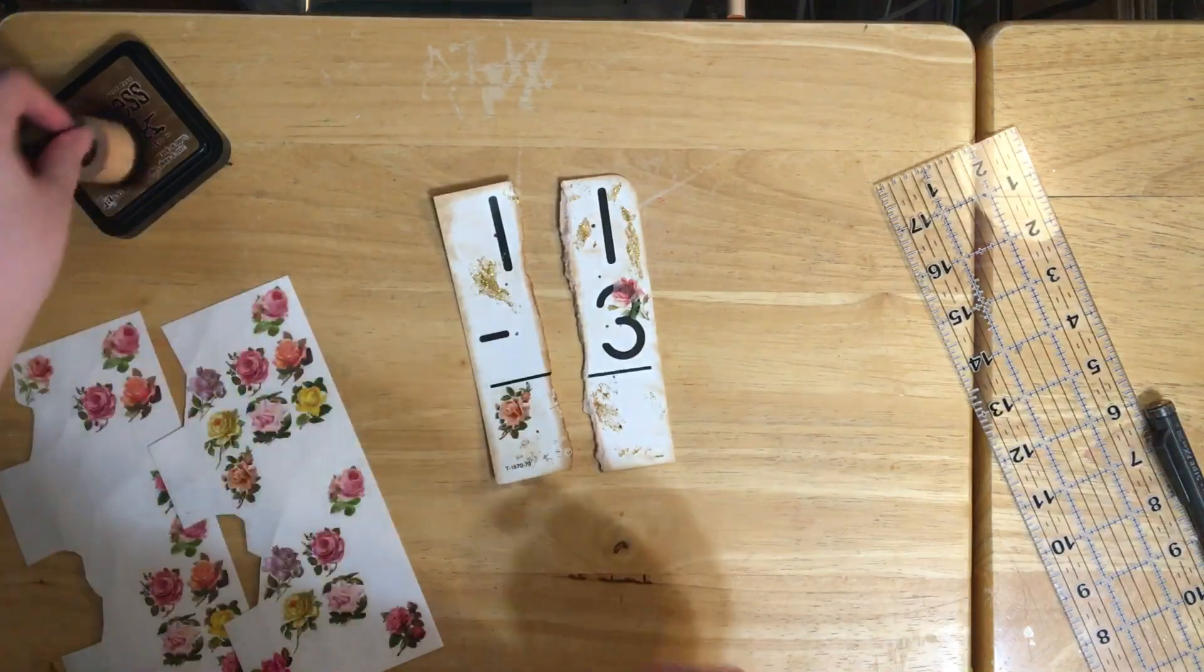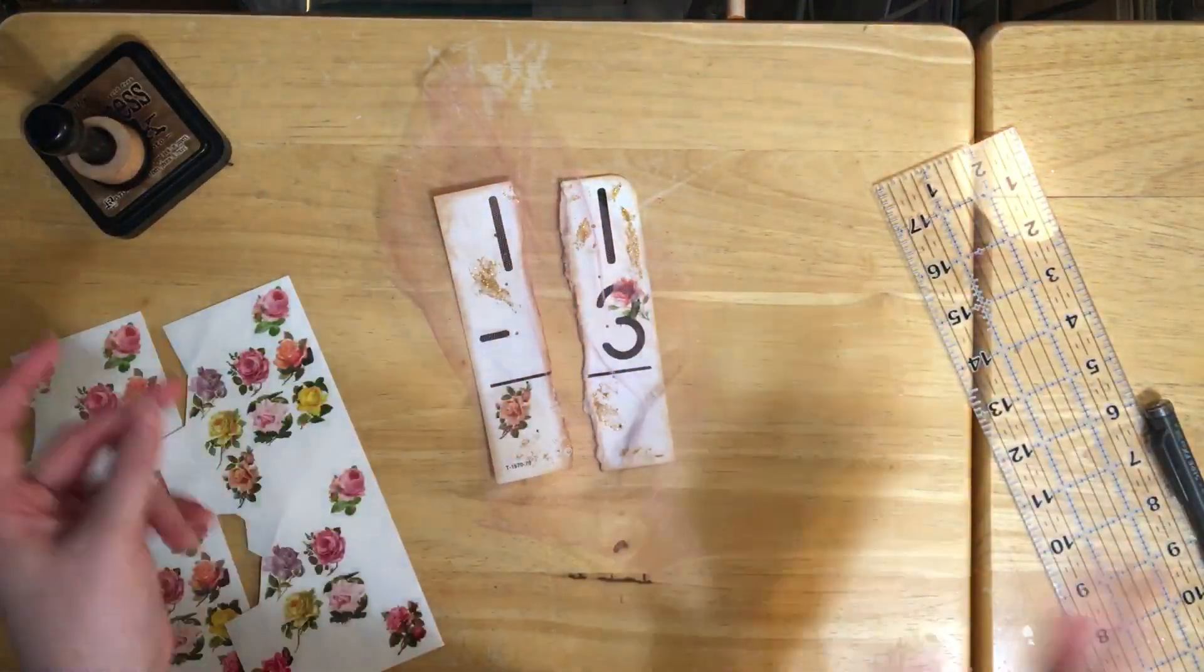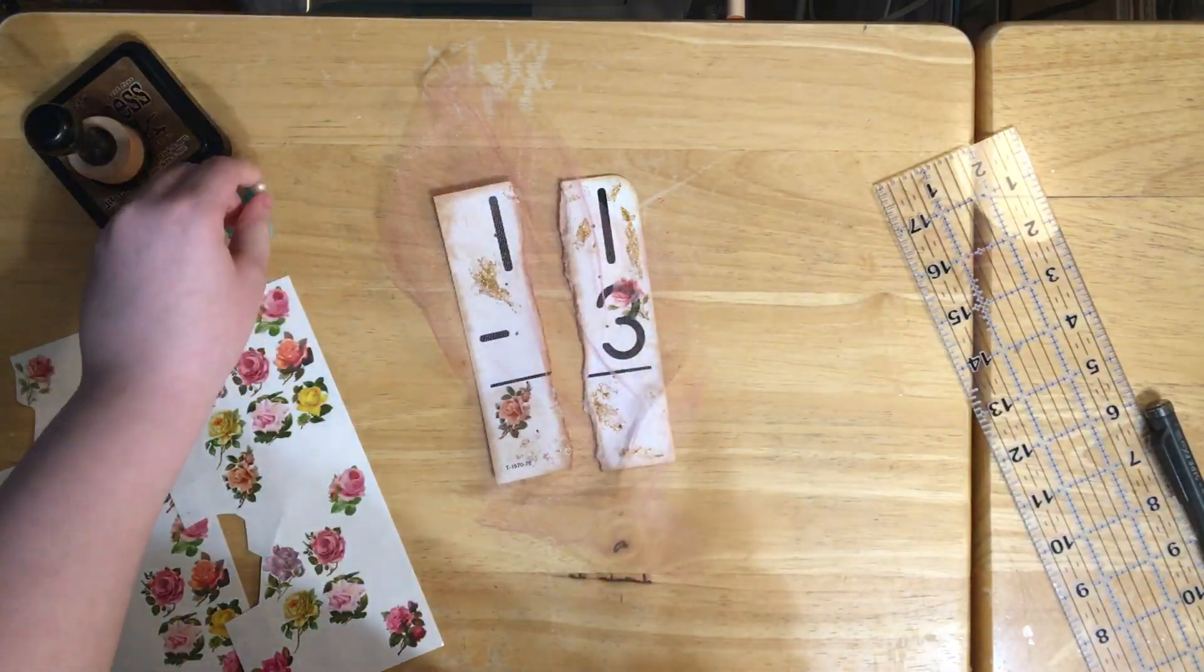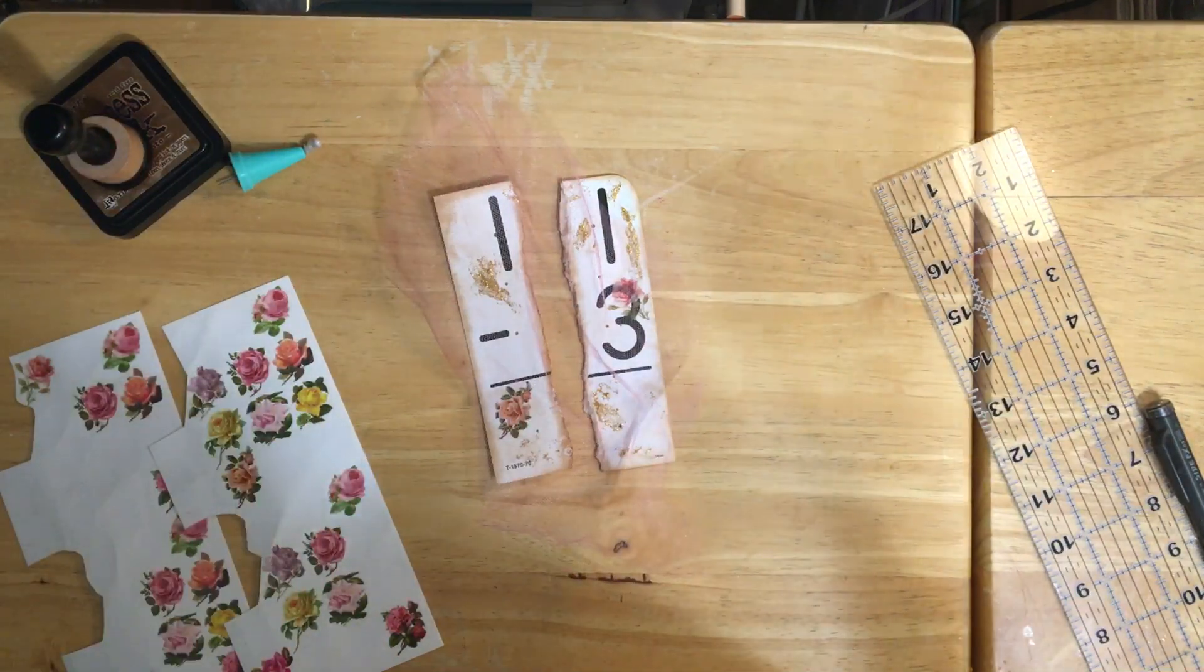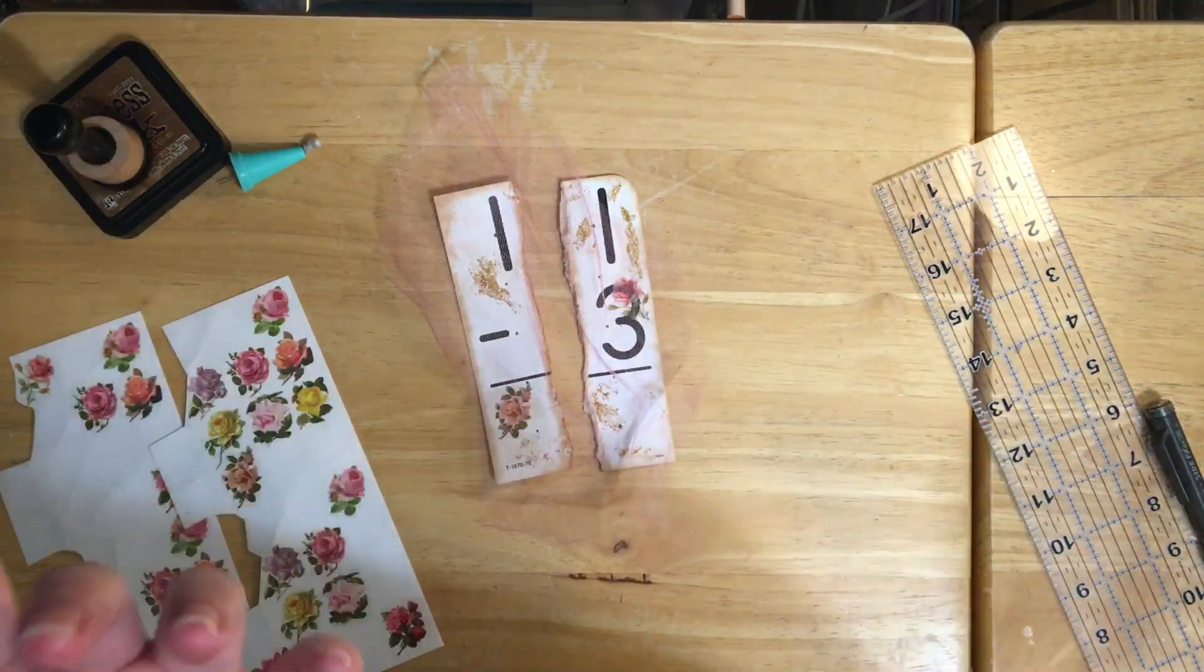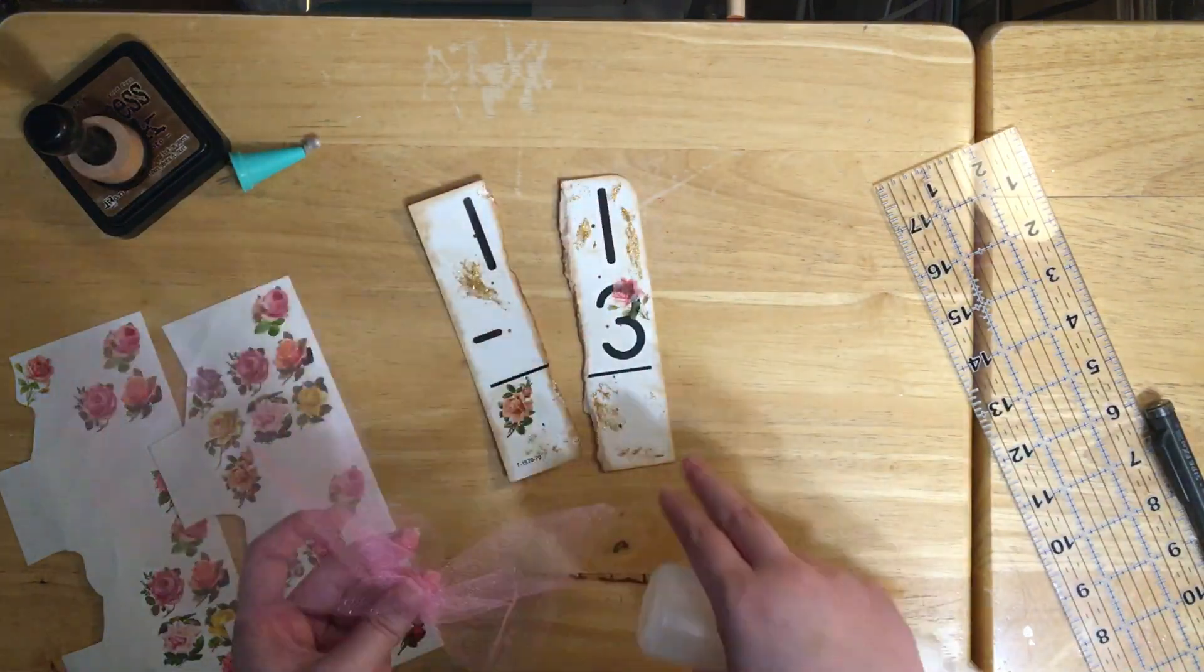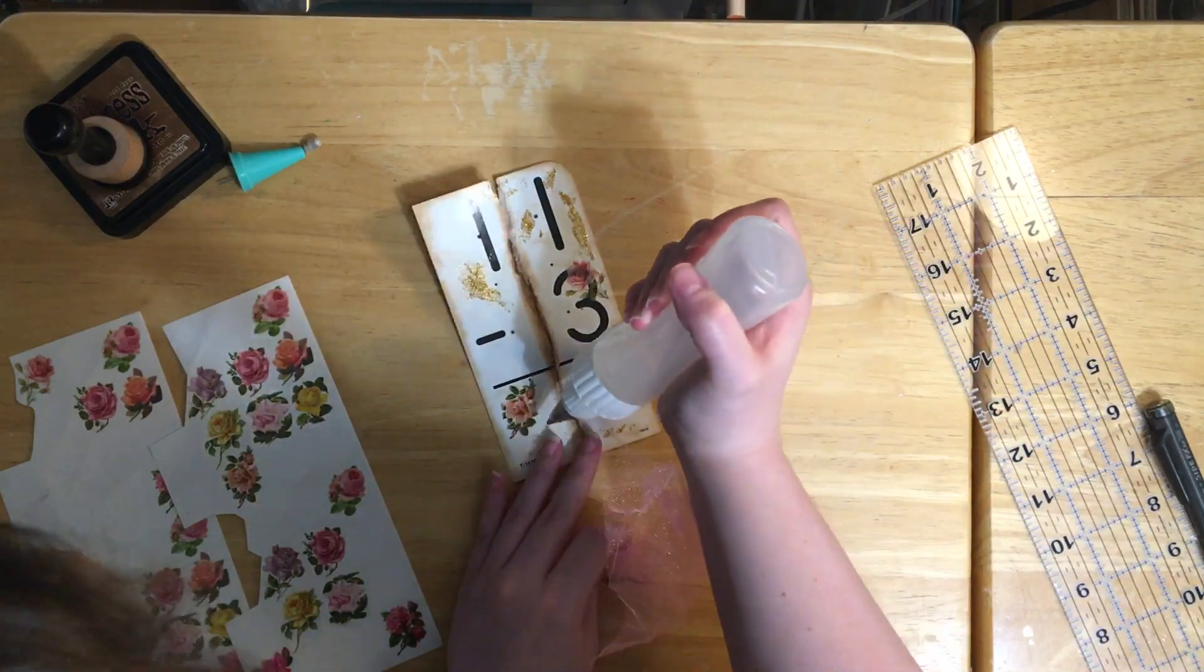Now we have our broken piece. I'm going to take this tulle because part of the challenge was to add mesh. I didn't really know what mesh meant - I figured tulle, cheesecloth, some laces kind of resemble mesh in my opinion, so that's what I'm going with.